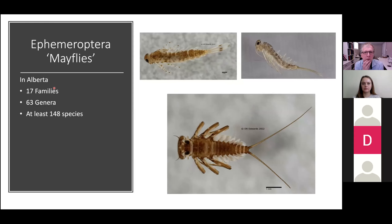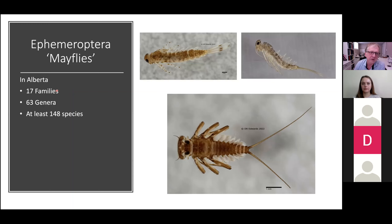We've gone through what's published and through a number of databases available online, including CABIN, ABMIS, and a few others, as well as museums like the Strickland. As far as we can see at this point, there are 17 families, 63 genera, and at least 148 species known from Alberta. These are all very common species and genera in the province.